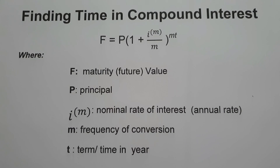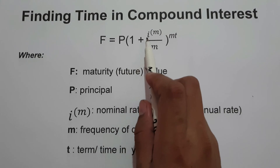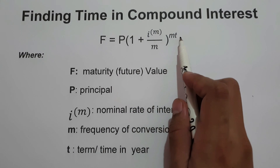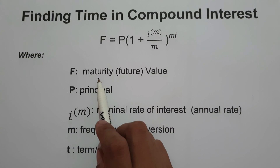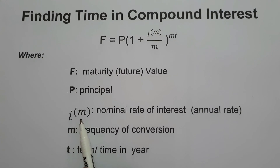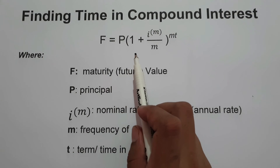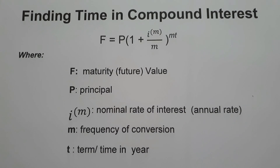Welcome to another video. In this video, we are going to talk about how to find time in compound interest. To find time in compound interest, we are going to use the formula F equals P times the quantity of 1 plus I over M, raised to MT. Where F is the future value or maturity value, P is the principal or present value, I is the nominal rate, M is the frequency of conversion, and T is the term or time in years.